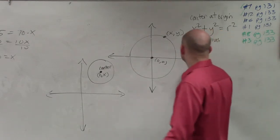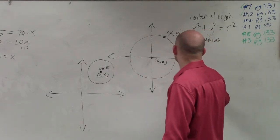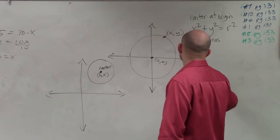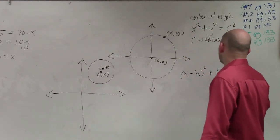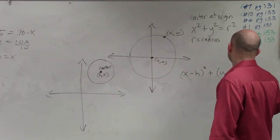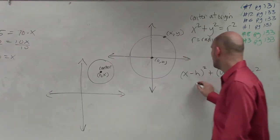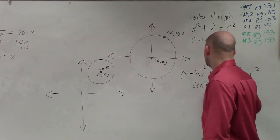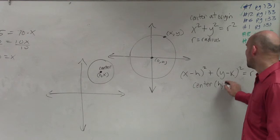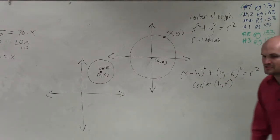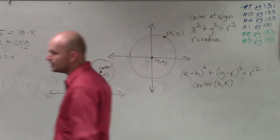But when it's not at the origin, I have x minus h squared plus y minus k squared equals r squared, where the center is now the coordinate point h comma k. And r still represents the radius, all right?